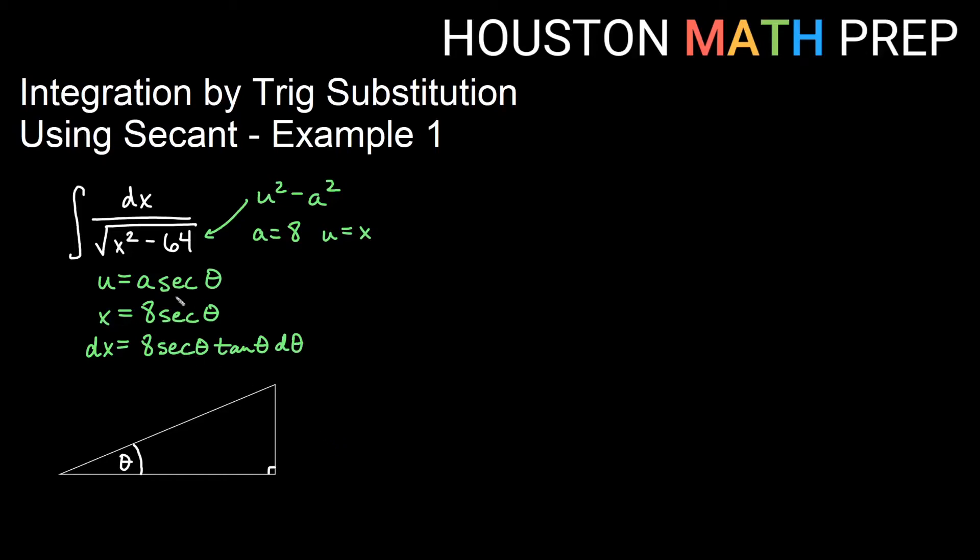Using my substitution x equals 8 secant theta, I want to start to develop my right triangle. I'm going to go ahead and divide both sides by 8 here so I can get a nice idea of where to put things in my triangle. Secant theta would be x over 8.